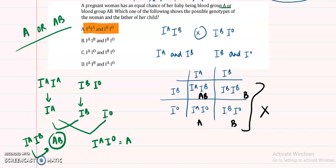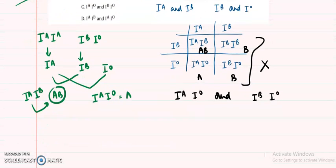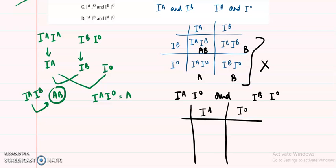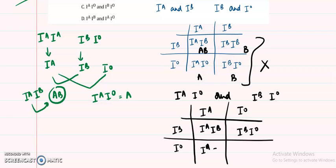For option C — IAIO crossed with IBIO — the Punnett square gives IAIB (AB), IBIO (B), IAIO (A), and IOIO (O). Since B and O blood groups also appear, this does not fit the condition of only A and AB, so option C is ruled out as well.